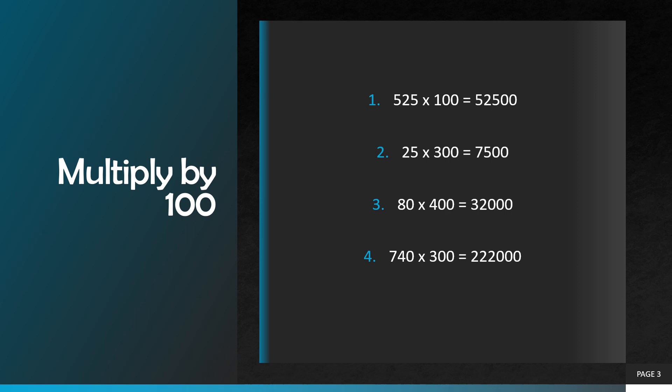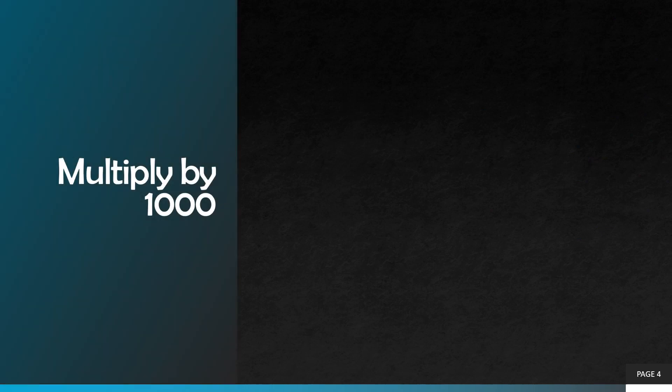Question number four: seven hundred and forty multiplied by three hundred. We are going to add three zeros in our answer. Seventy four multiplied by three is equal to two hundred and twenty two, so our correct answer will be two hundred and twenty two thousand.